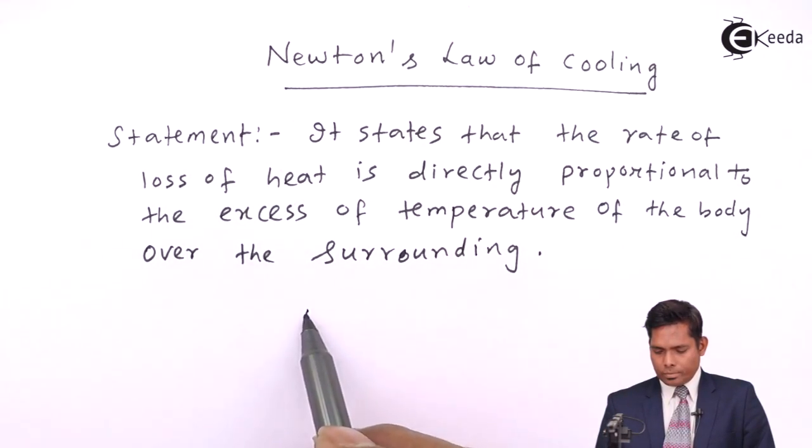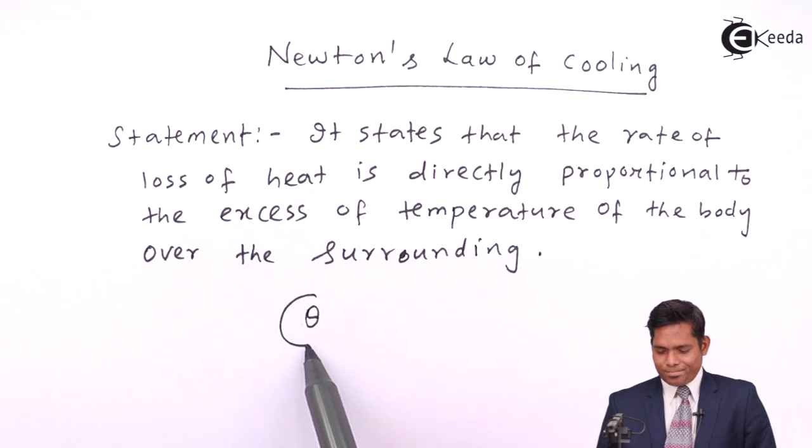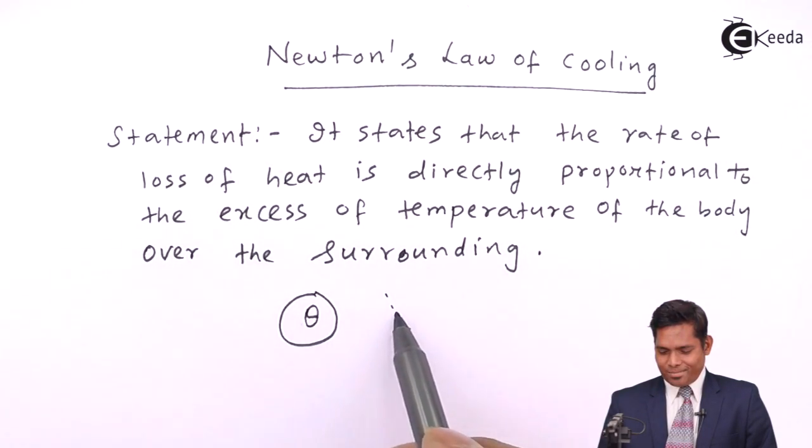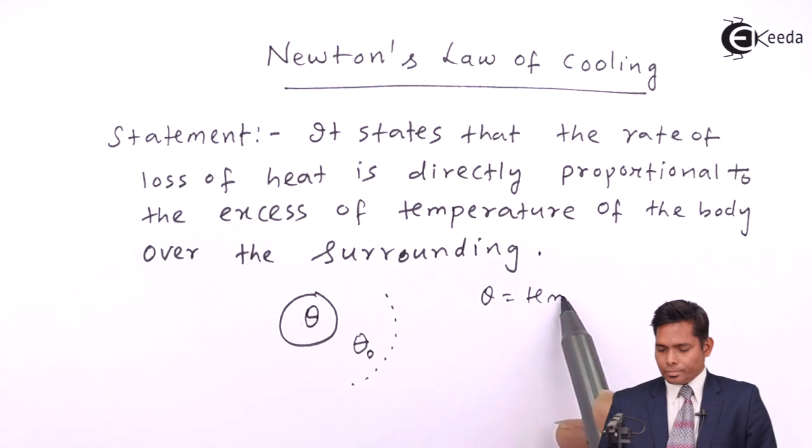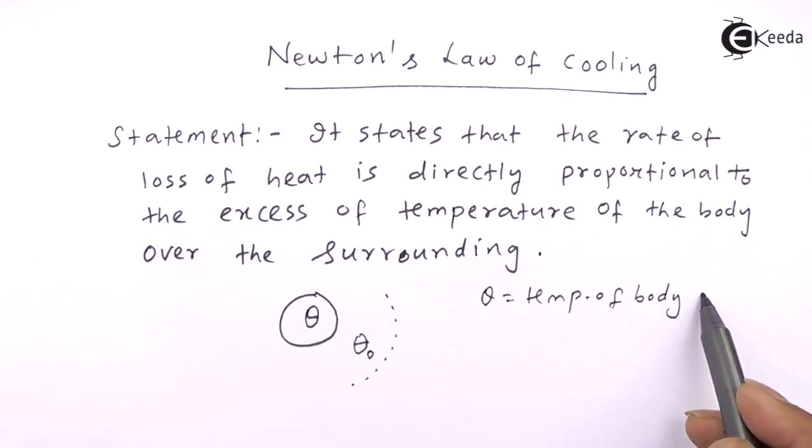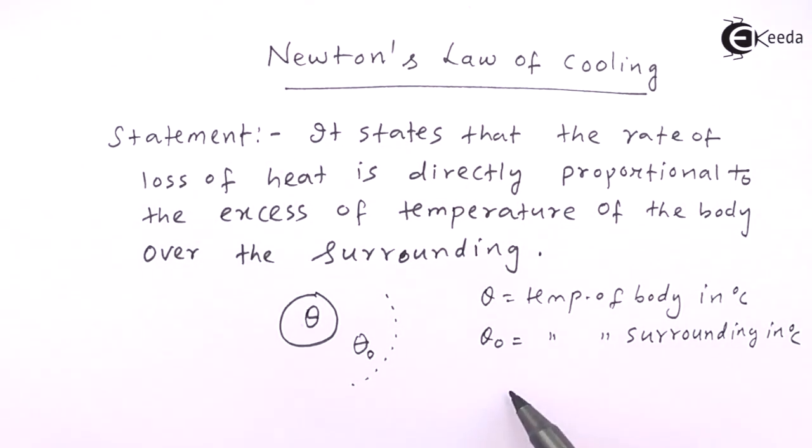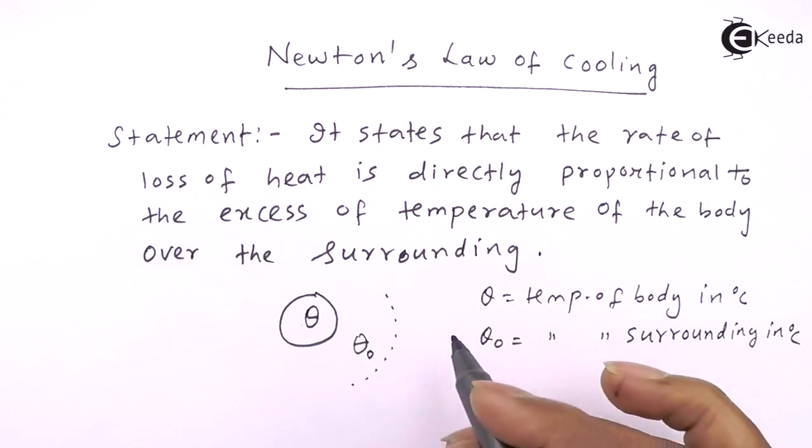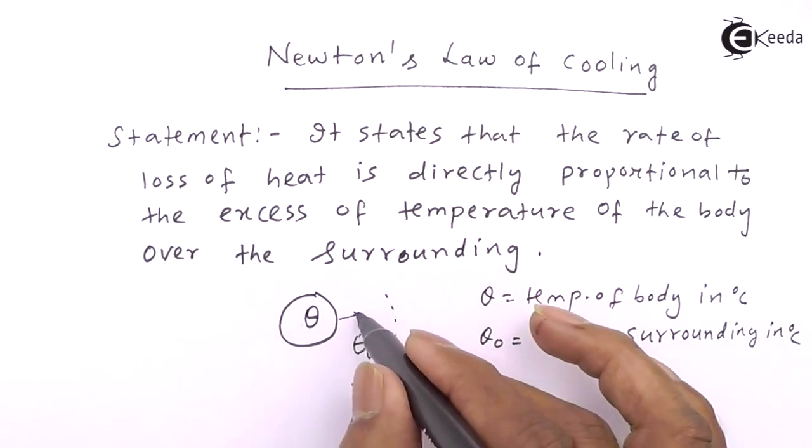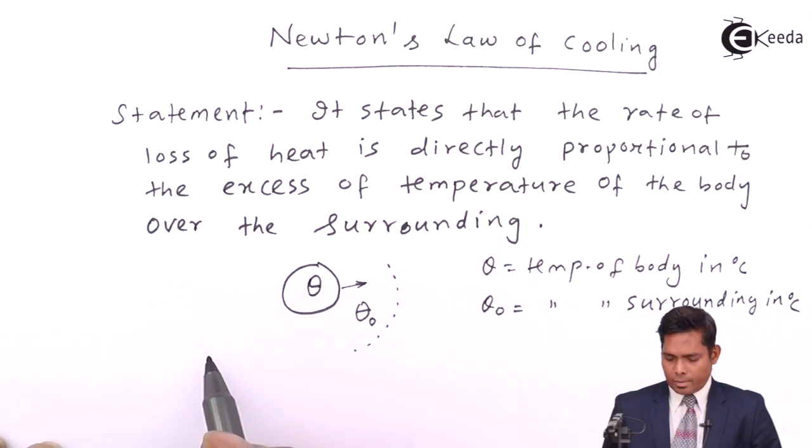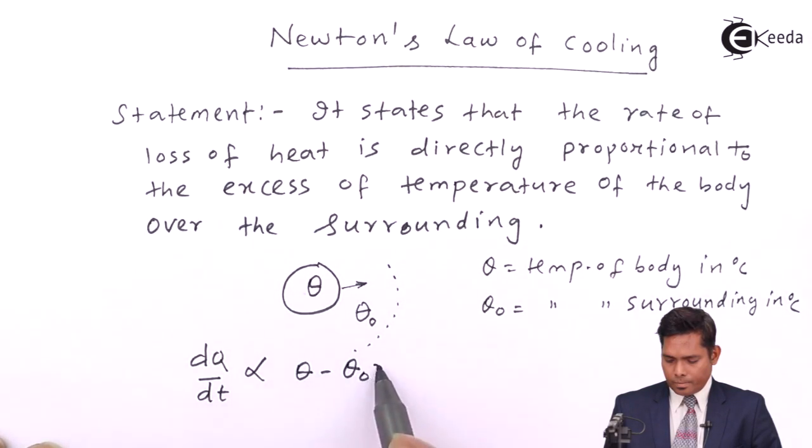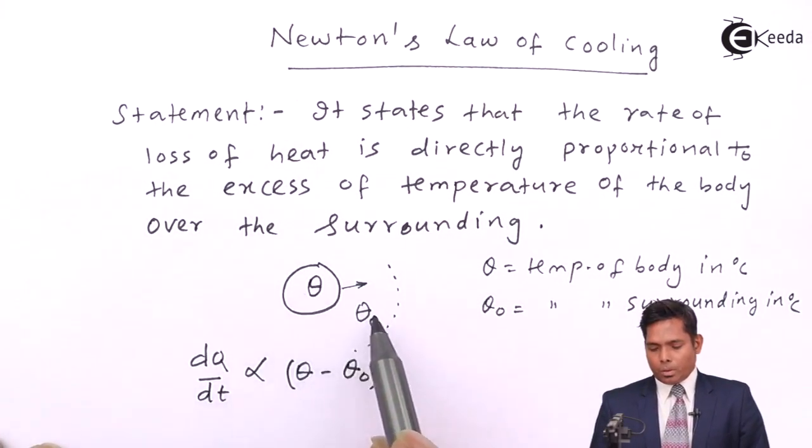If θ is the temperature of the body and θ₀ is the temperature of the surrounding in degree centigrade, then the heat that it emits per second, this is the law. The excess of temperature, the difference of the temperature of the body over the surrounding.